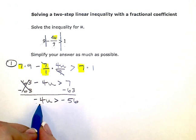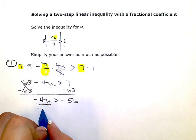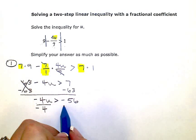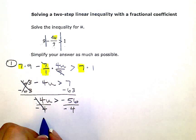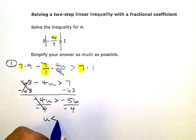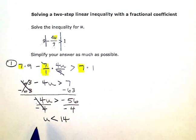My last step now is to get rid of this coefficient. Now I am dividing by a negative. So when I take this step, I am going to need to flip my inequality sign. When I simplify, I'll be left with u on the left. Now I need to flip my inequality to go the other way. Negative 56 divided by negative four on the right, which gives me a positive 14. So the solution here is u is less than 14.